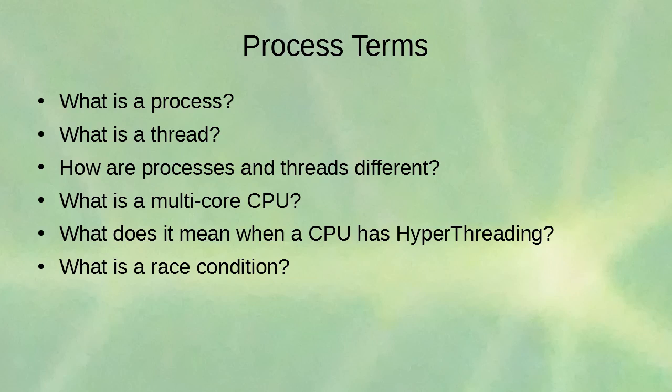In a hyper-threading situation you still only have one process running at a time, whereas in a multi-core situation you have multiple processes that can actually run simultaneously. So that brings us to the next topic: what is a race condition?